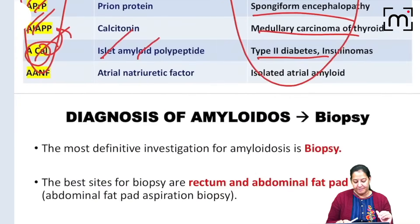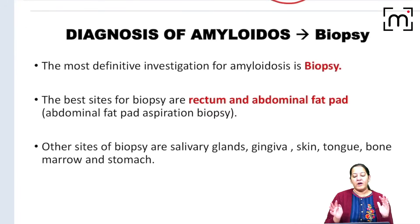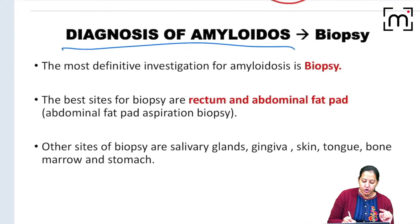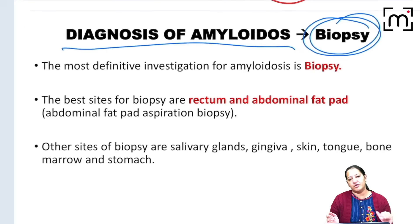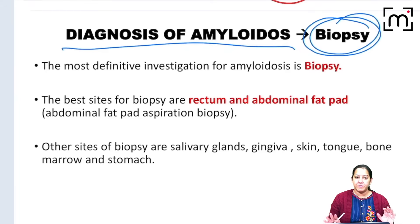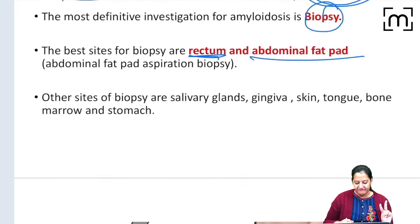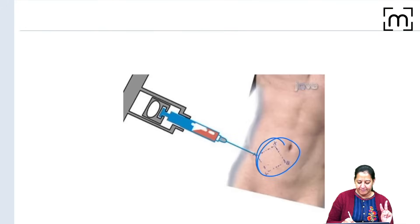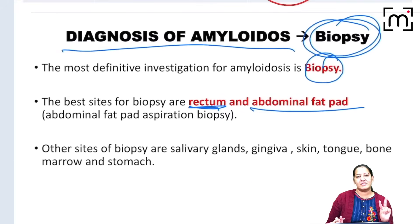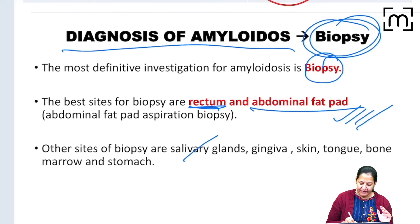For diagnosing amyloid we do a biopsy, as there is no blood test. Since amyloid is a multi-organ disease deposited throughout the body, the best biopsy sites are: number one, the rectum, and number two, the abdominal fat pad. Apart from these, biopsy can also be done from the salivary gland, gingiva, skin, tongue, bone marrow, or stomach.